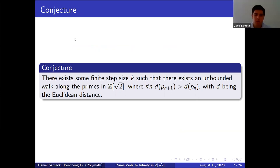We conjecture that there exists some finite step size k such that there exists an unbounded walk along the primes of Z[√2] where we have the restriction that for all n, our next prime in the walk is further from the origin than the previous one, where we use the Euclidean distance to mean further from the origin.